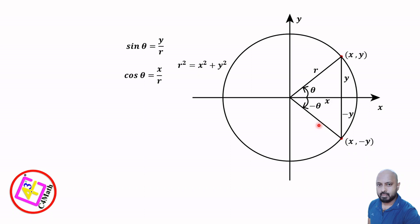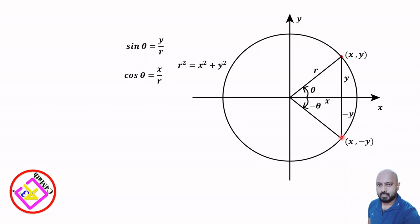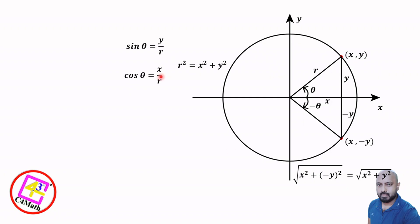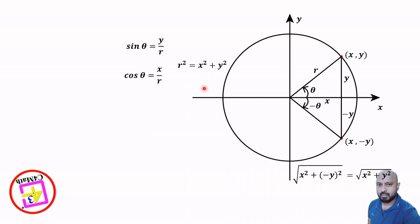We know this is the radius of the circle, that is r. To confirm, we use the Pythagorean theorem on the reflected right angle triangle. The hypotenuse equals the square root of x squared plus negative y whole squared, which equals the square root of x squared plus y squared. From the original relation, r squared equals x squared plus y squared, so this equals r. Therefore, the hypotenuse of the reflected triangle is also r.